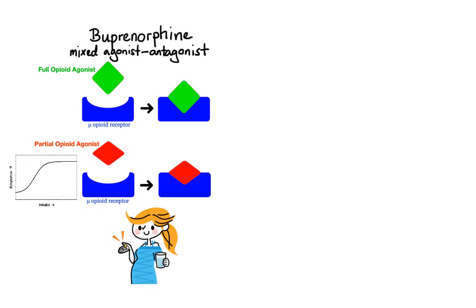Now, let's move on to our last agent, that is naloxone. So naloxone is an opioid antagonist that can be used to block or reverse the effects of opioid drugs.